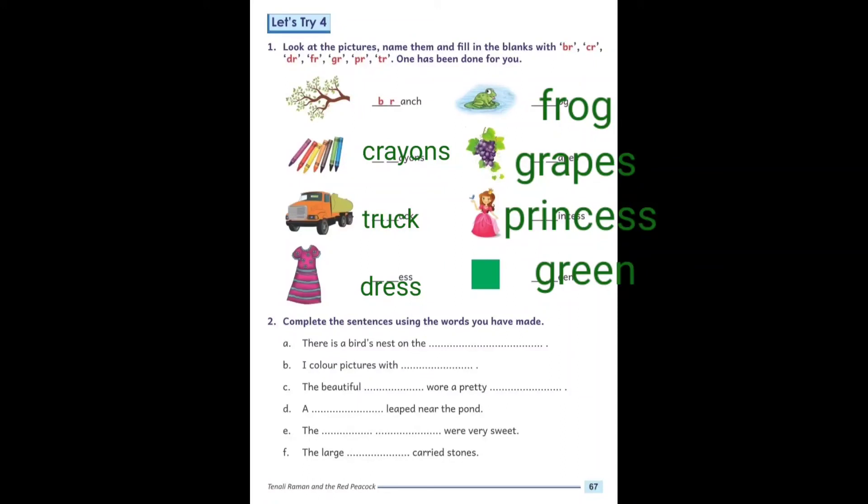Now we read next sentence. Complete the sentences using the words you have made. There is a bird's nest on the dash - here we write branch, B-R-A-N-C-H. Next, I color pictures with crayons, C-R-A-Y-O-N-S.